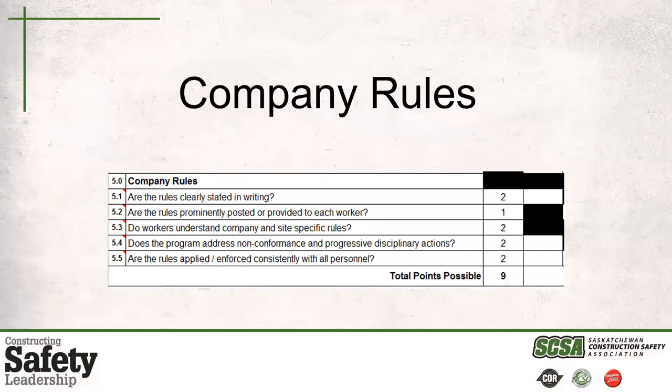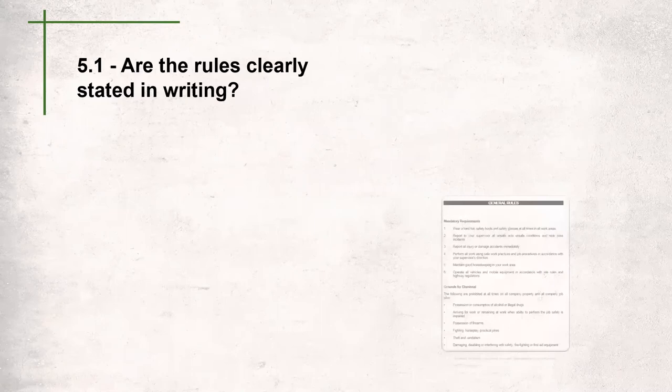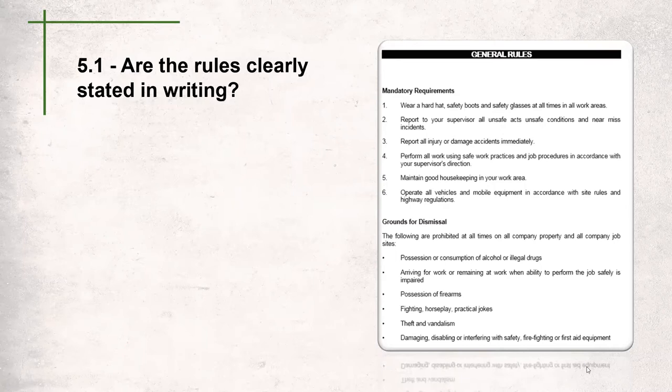We'll jump right into company rules. There are five questions in this section for a total of nine points. The first question asks: are the rules clearly stated in writing? The company rules must be written in the manual — they must be clear and enforceable. In this example, they have mandatory requirements as well as grounds for dismissal. Grounds for dismissal are rules that, if broken, mean the employee would be dismissed immediately rather than following the normal progressive discipline process.